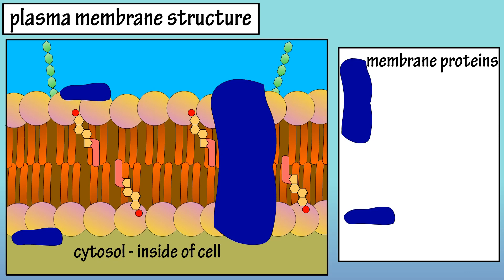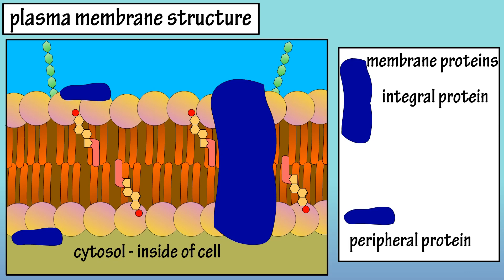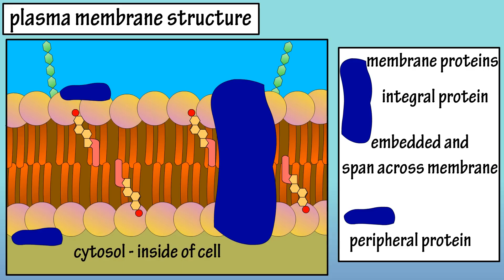Glycolipids help maintain the stability of the membrane and aid in cell recognition. Proteins are also dispersed throughout the membrane and they have several key roles. There are two structural types of membrane proteins: integral proteins and peripheral proteins. Integral proteins are embedded in the membrane and extend across it, with many being glycoproteins, which are proteins with carbohydrates attached.